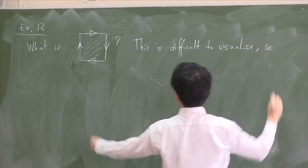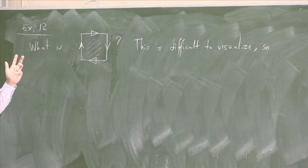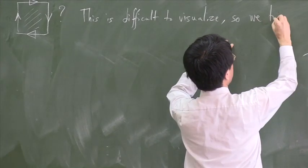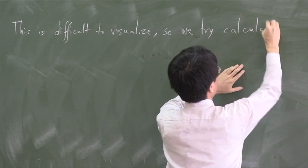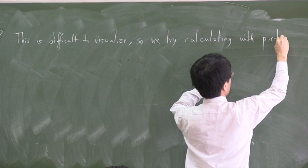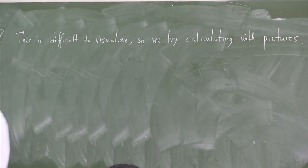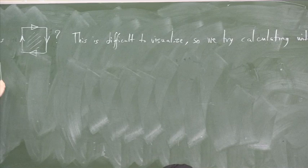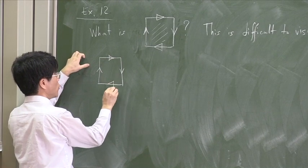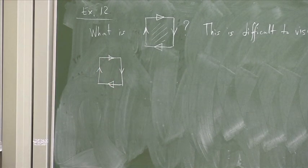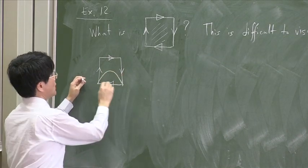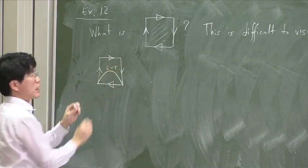So let us try to figure out what this looks like by calculating with pictures. Here is how we shall calculate. We start from this, keeping track of how the identifications go. And I cut it along this curve. I cut the whole thing along this curve.